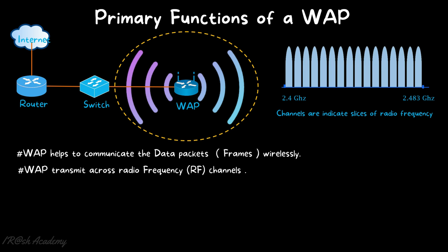Point number two: wireless access points transmit across radio frequency or RF channels. You may wonder how a wireless access point transmits data. In a network switch and hub, data transmission happens through the copper cable in the form of electric signals. But in a wireless access point, transmission happens through the radio frequency channel, using specific channel ranges to transmit data wirelessly. Devices connected to this wireless network communicate through the radio channel.